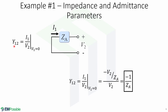Now we will find Y12, which means I1 over V2 when V1 equals 0. This means that we are shorting port 1, leaving us with I1 and V2. I1 in terms of V2 and ZA gives us this expression. Simplifying gives us that Y12 equals minus 1 over ZA.